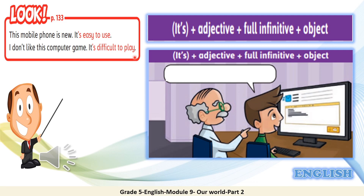Look at this picture. We can see a granddad who told his grandson: 'It's easy to send an email.' So here it's: it's plus adjective, plus full infinitive, plus object — 'an email.' The full sentence is: 'It's easy to send an email.'